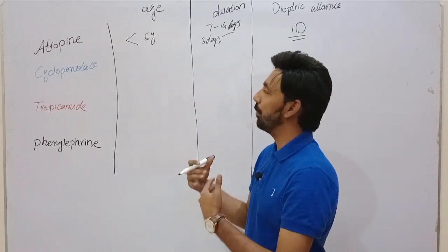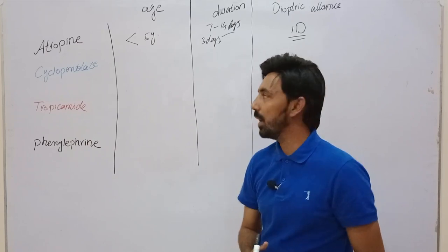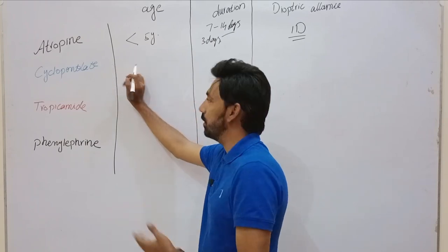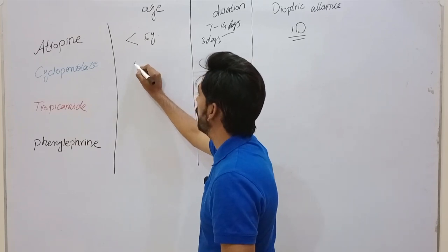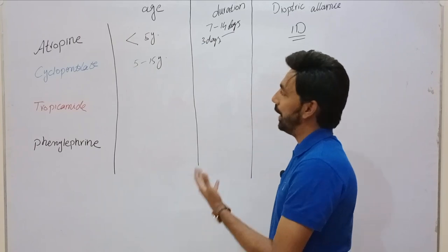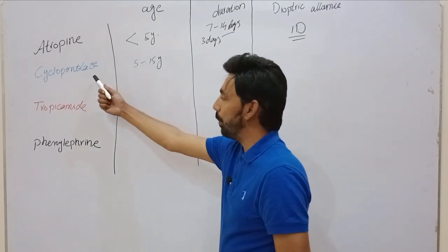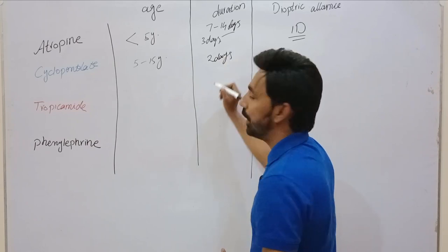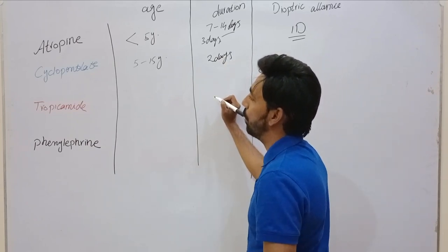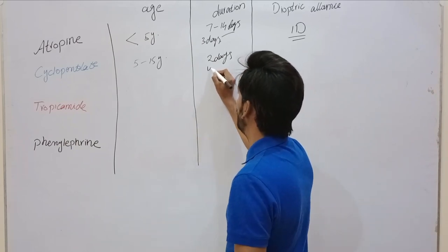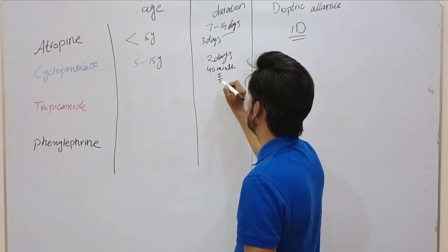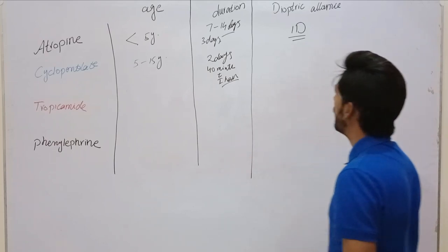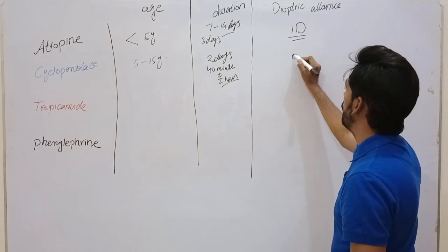Cyclopentolate — whose commercial name is Cyclopen — is prescribed for cycloplegic refraction in the age group of 5 to 15 years. The duration of cyclopentolate is approximately two days or 48 hours. The peak time for retinoscopy after instillation is 40 minutes to one hour. The dioptric allowance for cyclopentolate is 0.75 diopters.